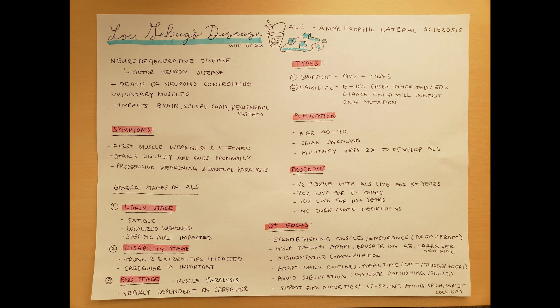The second stage is called the disability stage. This is when we're no longer at just localized weakness — the trunk and extremities are impacted. A caregiver becomes very important since more ADLs are affected. People will also give up driving at this stage because it's no longer safe. The end stage is when there is muscle paralysis. You are nearly dependent on your caregiver for everything, with very little mobility outside of being in a wheelchair or on bed rest.